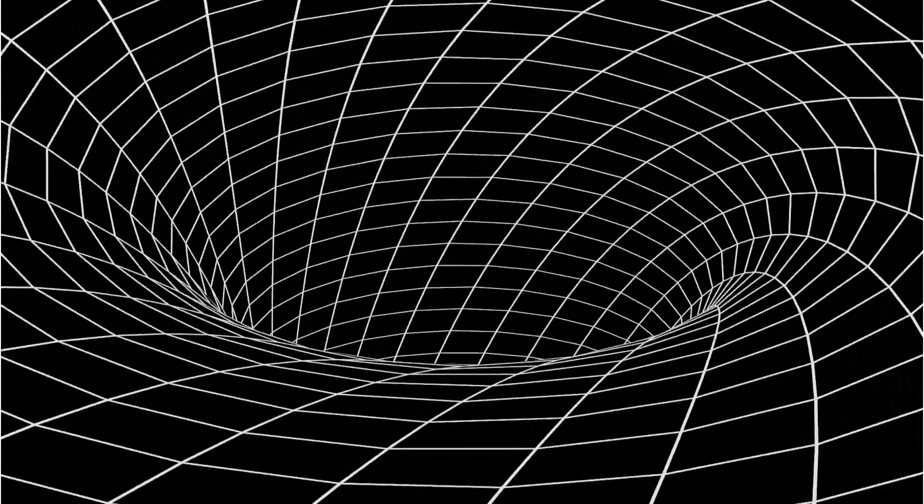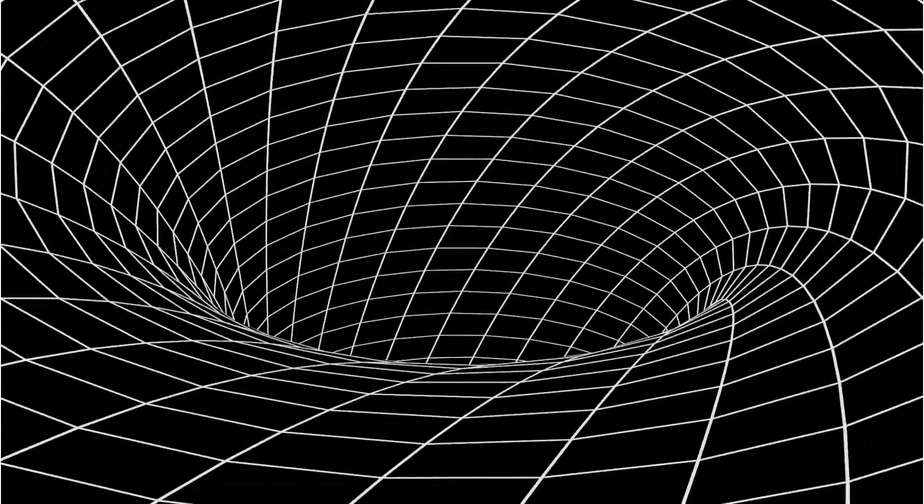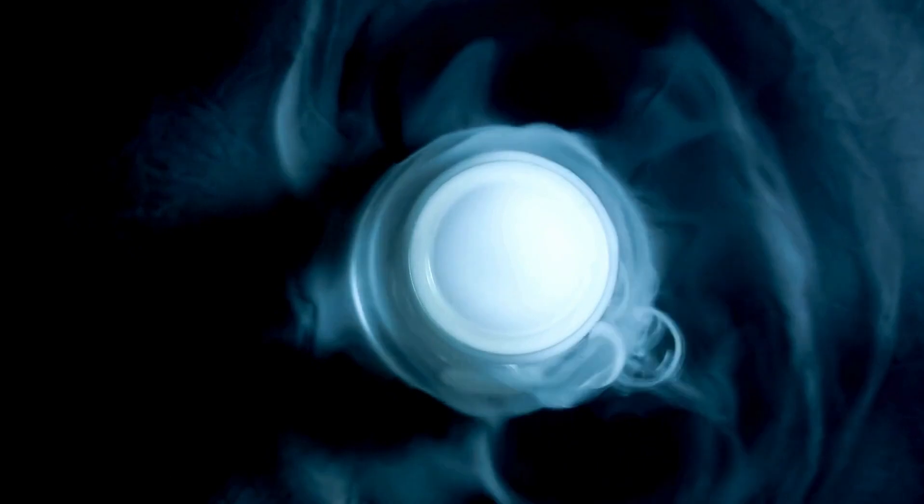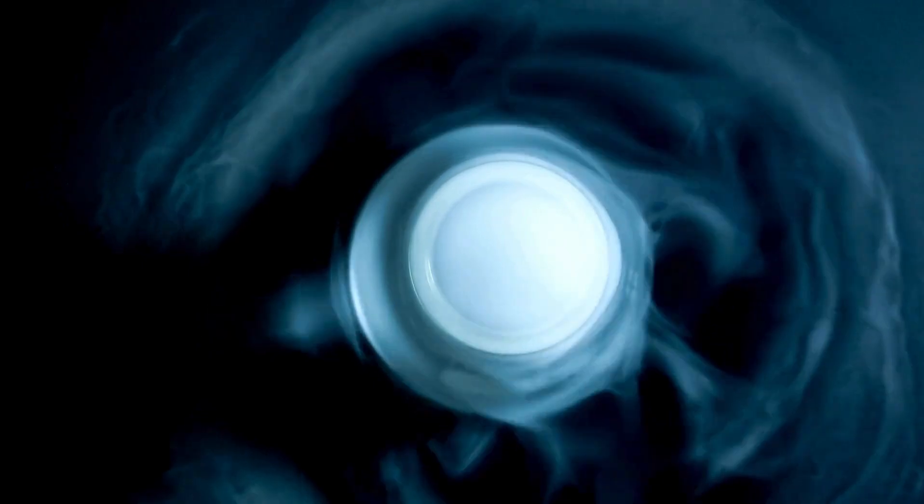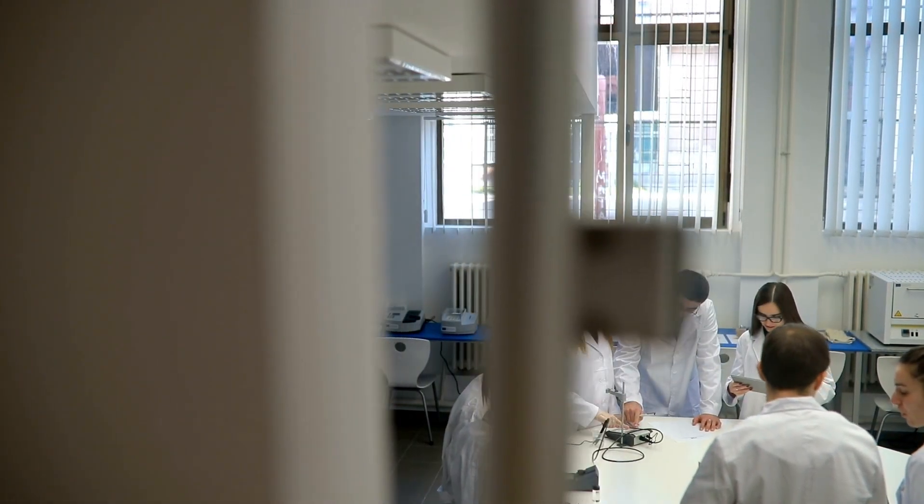Massive bodies like stars or black holes are particularly effective at causing significant gravitational lensing due to their immense gravitational pull. Among these, black holes represent one of the most extreme examples, with their incredible mass and compact size leading to pronounced lensing effects.